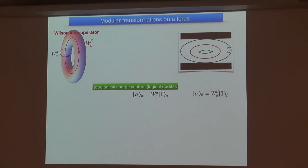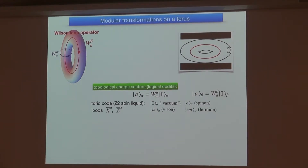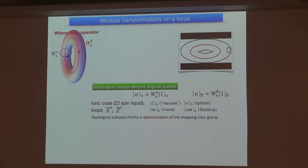With this operator, we can label the ground space or code space by the anyon charge, and define so-called topological sectors. They are the logical qudits storing quantum information. We have two cycles: alpha and beta. We can label states with this anyon charge by choosing one basis and inserting the Wilson loop into the vacuum. You can also choose the dual cycle. In the more familiar case like the toric code, this is nothing but the Pauli-string operators X or Z, which don't commute with each other. The four-level qudits are the four topological sectors: vacuum, E, M, and their combination.